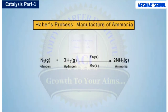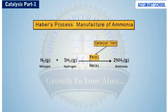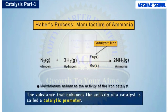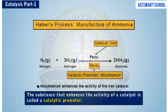Haber's process for the manufacture of ammonia is carried out in the presence of iron and molybdenum. Iron behaves as the catalyst in this reaction, while molybdenum enhances the activity of the iron catalyst. The substance that enhances the activity of a catalyst is called a catalytic promoter. In Haber's process, molybdenum acts as the catalytic promoter.